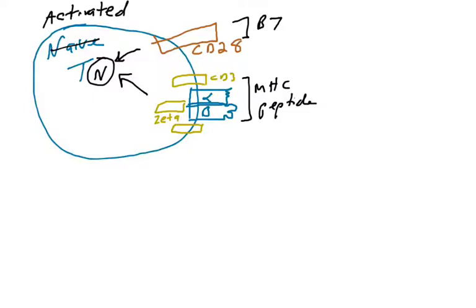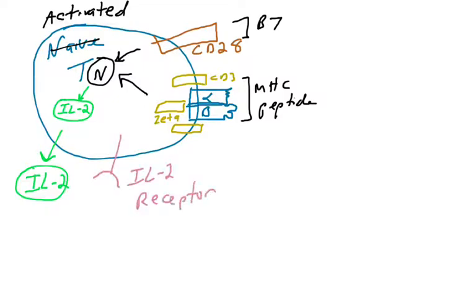We've activated this T cell, but again, there's only one of it. This T cell will turn on many genes in order to start T cell activation. One of the genes it turns on is IL-2, which is a cytokine that is released from activated T cells. The cytokine induces T cell proliferation and can bind to the IL-2 receptor on the surface of that same T cell.